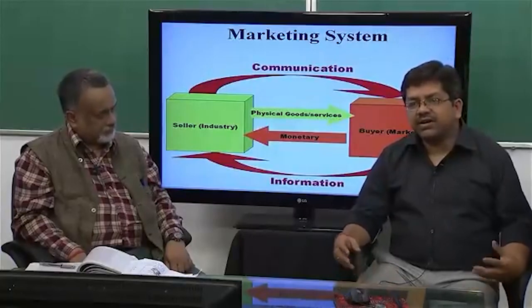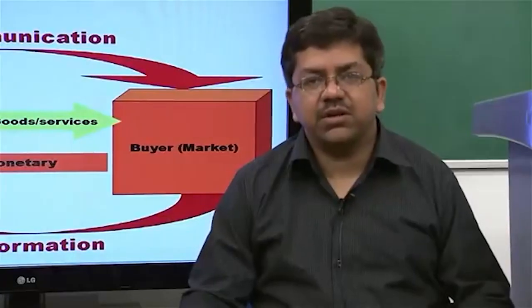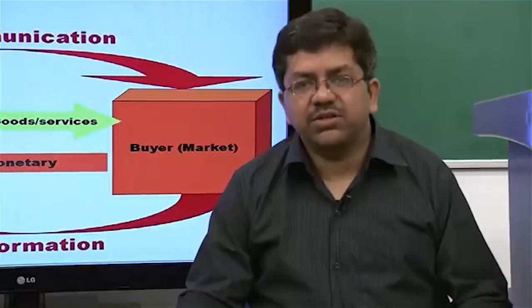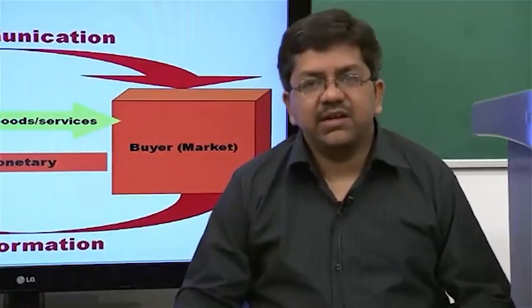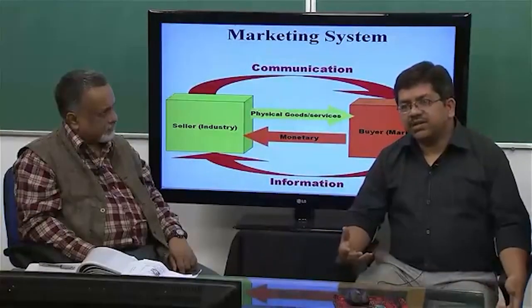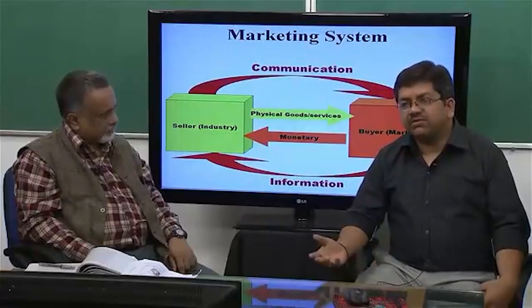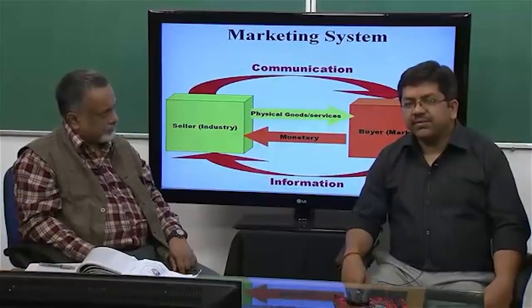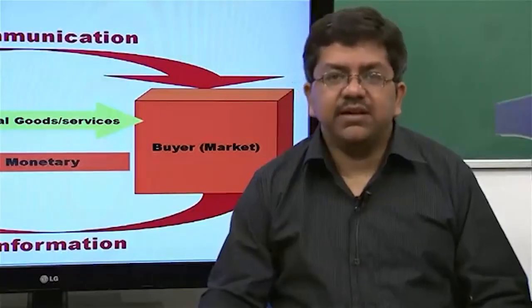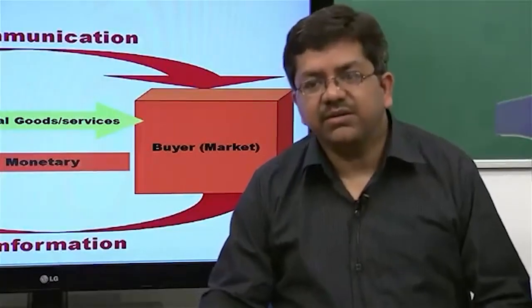We defined marketing from two different perspectives: as a social process and as an organizational function. Marketing is basically an exchange of value where two parties are involved. One could be termed as a seller, the other as a buyer. A group of sellers is termed as industry, and a group of buyers is commonly referred to as a market.